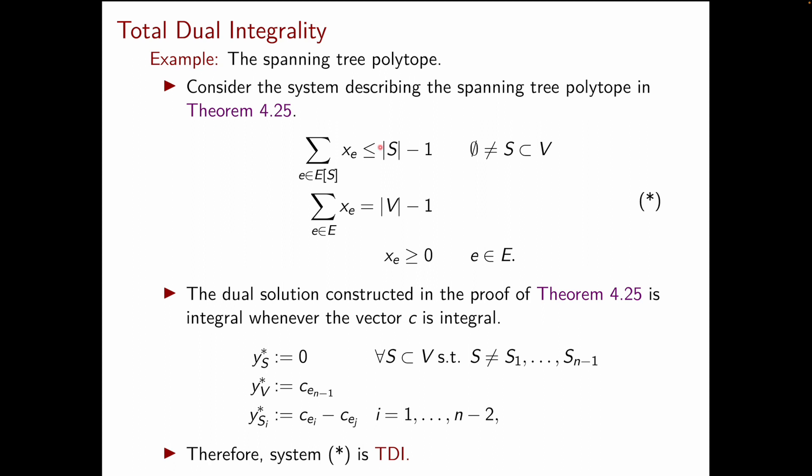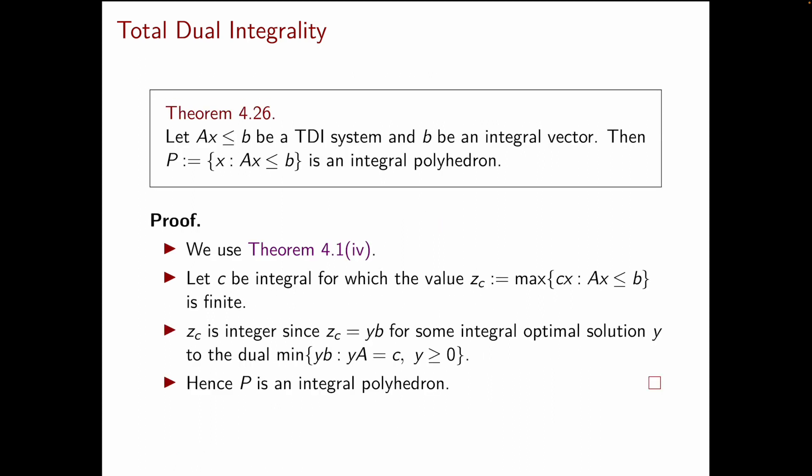Now, the right-hand side of all these constraints is integer. And this is because cardinality of S minus 1 and cardinality of V minus 1 are always integer numbers. And therefore, theorem 4.26 now implies that the spanning tree polytope is an integral polyhedron. So, essentially, we could have proven that the spanning tree polytope is integral using the concept of TDI-ness and theorem 4.26.